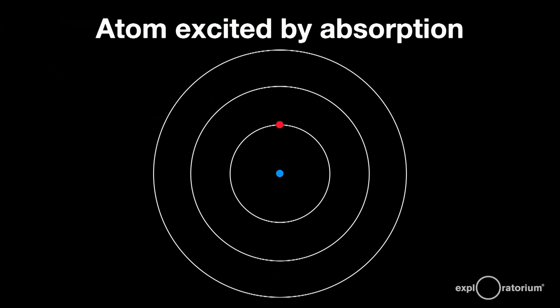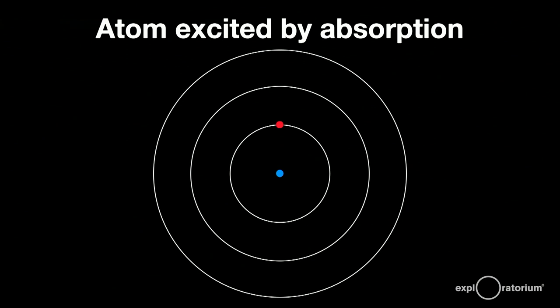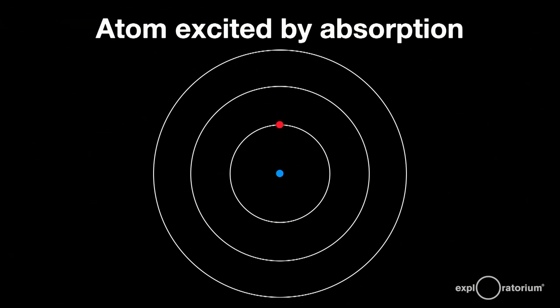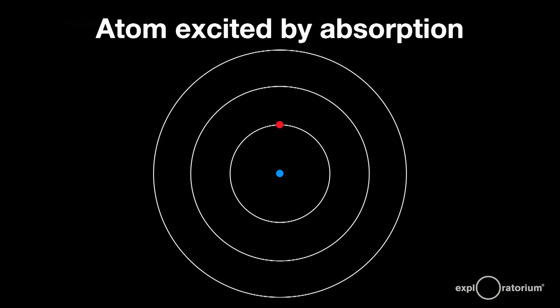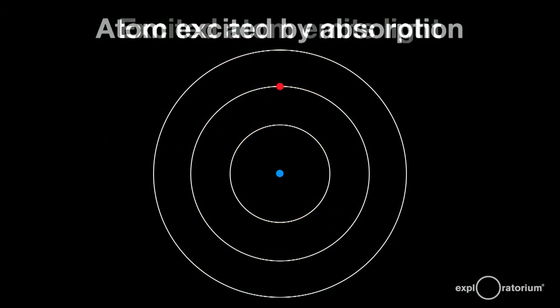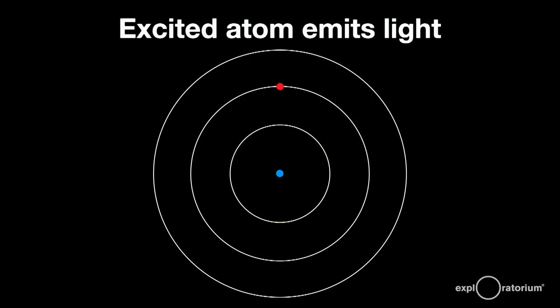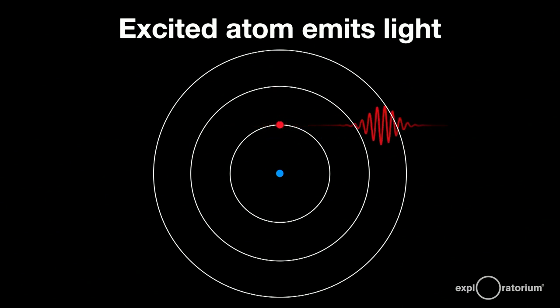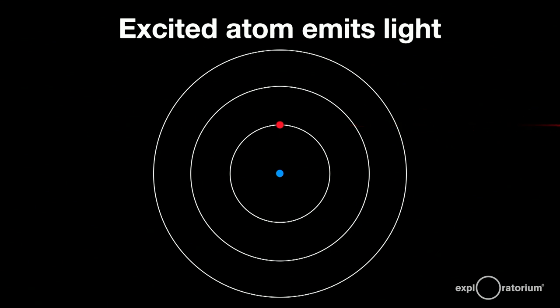Moving an electron from an inner shell to an outer shell requires you to put in energy. When electrons surrounding atoms are excited, they jump from a lower energy inner orbit to a higher energy outer orbit. The excitation energy comes from an electric current jostling the atoms, or it can come from incoming light energy being absorbed. Most of the time, the electrons immediately jump back, giving up the energy they gained as light. This is what you see in a neon sign or a fluorescent lamp.